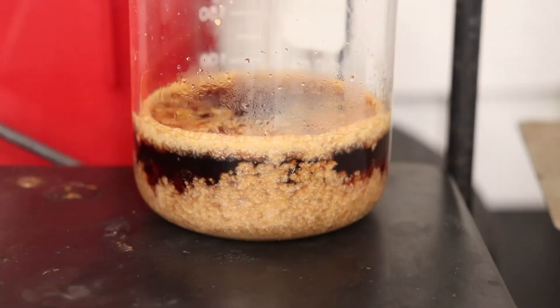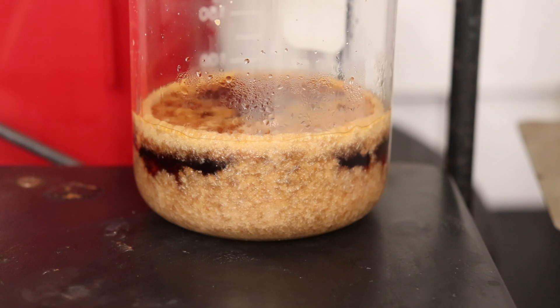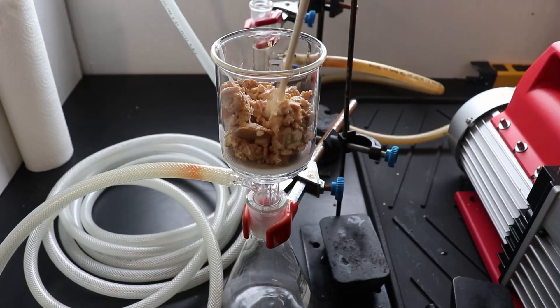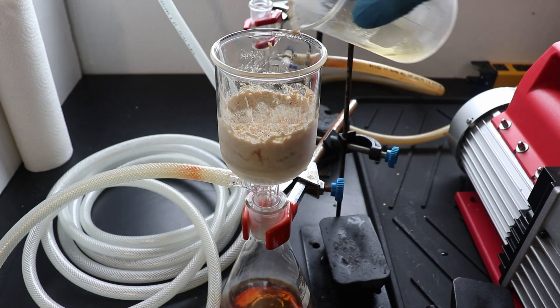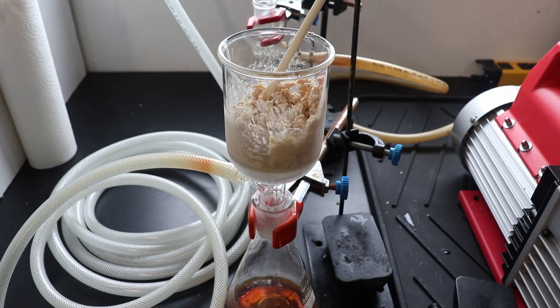Once everything had dissolved, I took the solution off the heat, allowing it to cool slowly to room temperature. I then placed it in the freezer for a few hours to fully crystallize, broke up the mass, and filtered it, then washed with a little ice-cold ethanol.